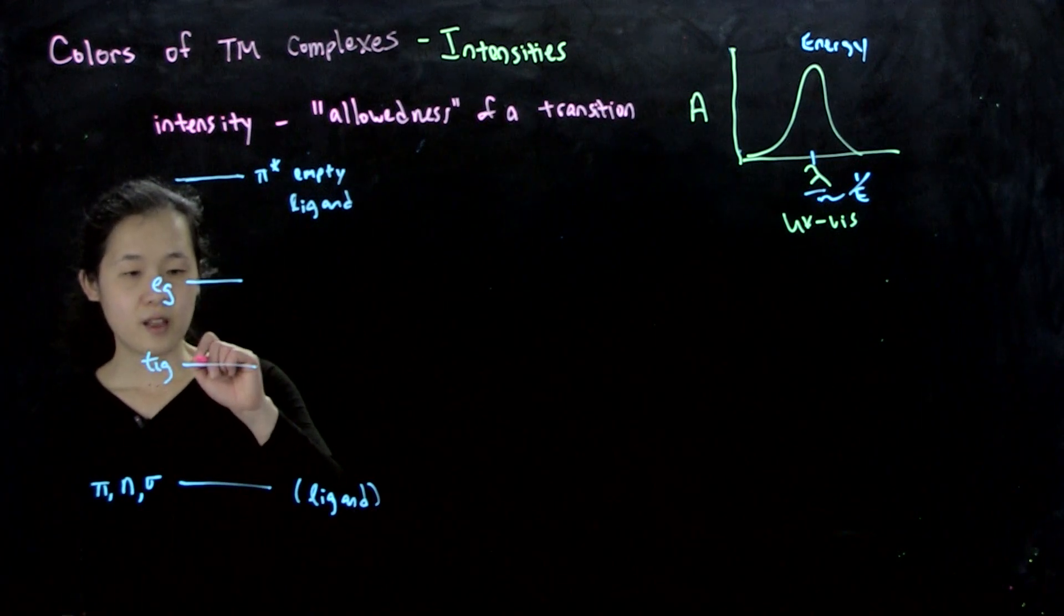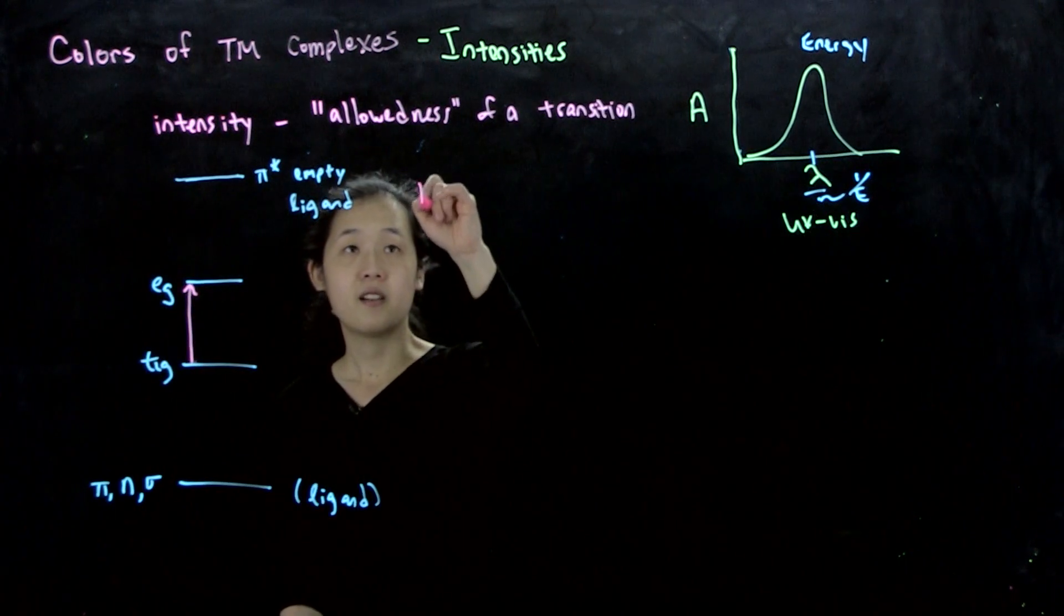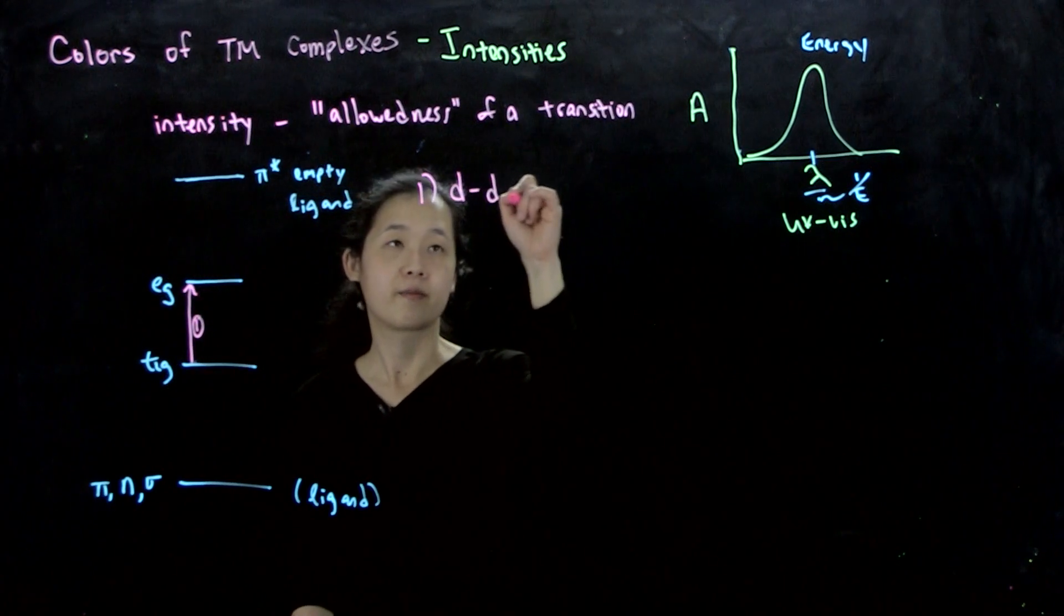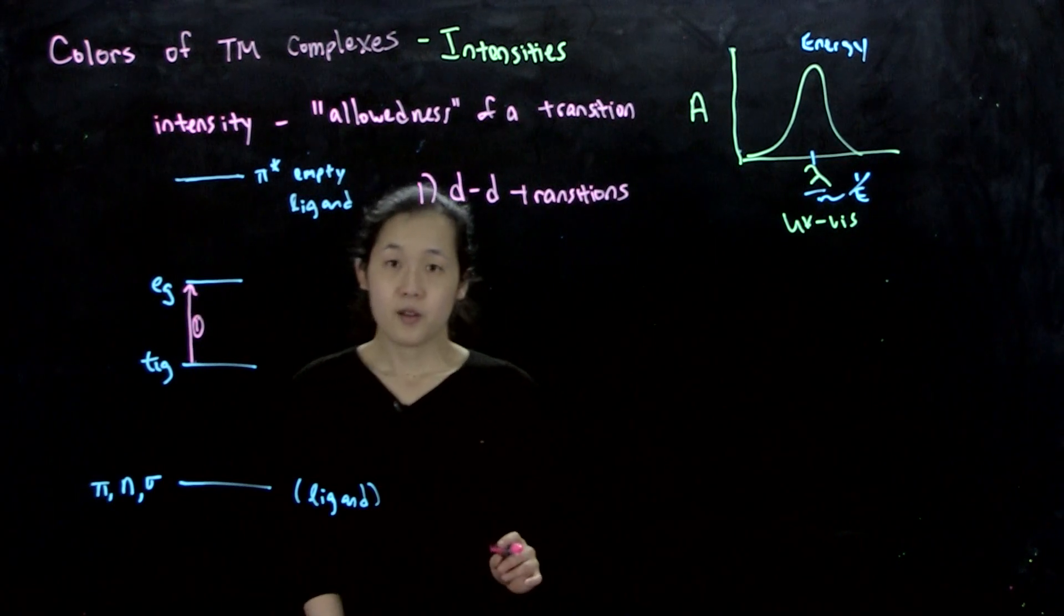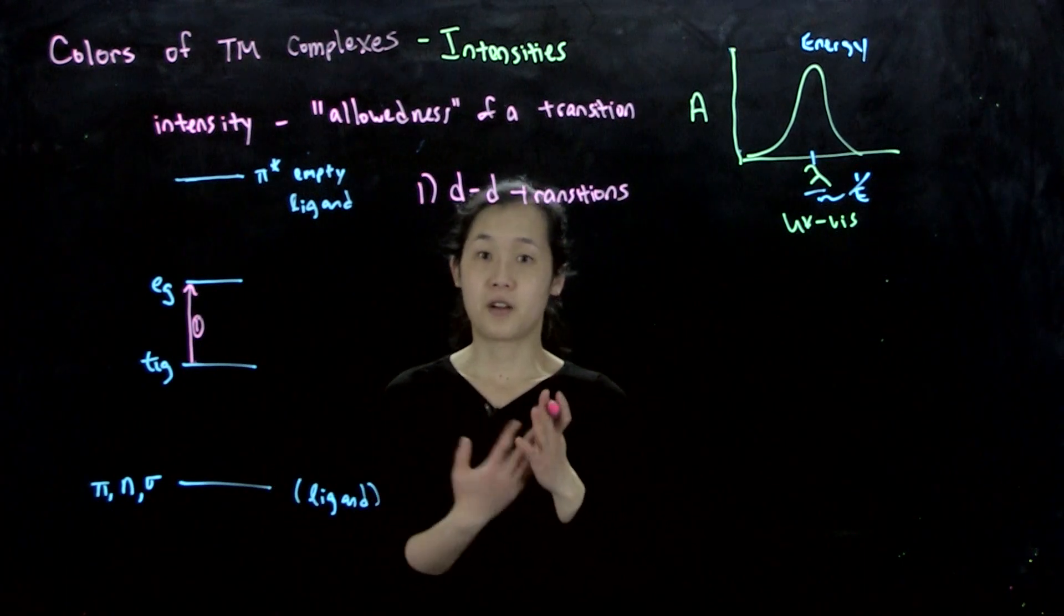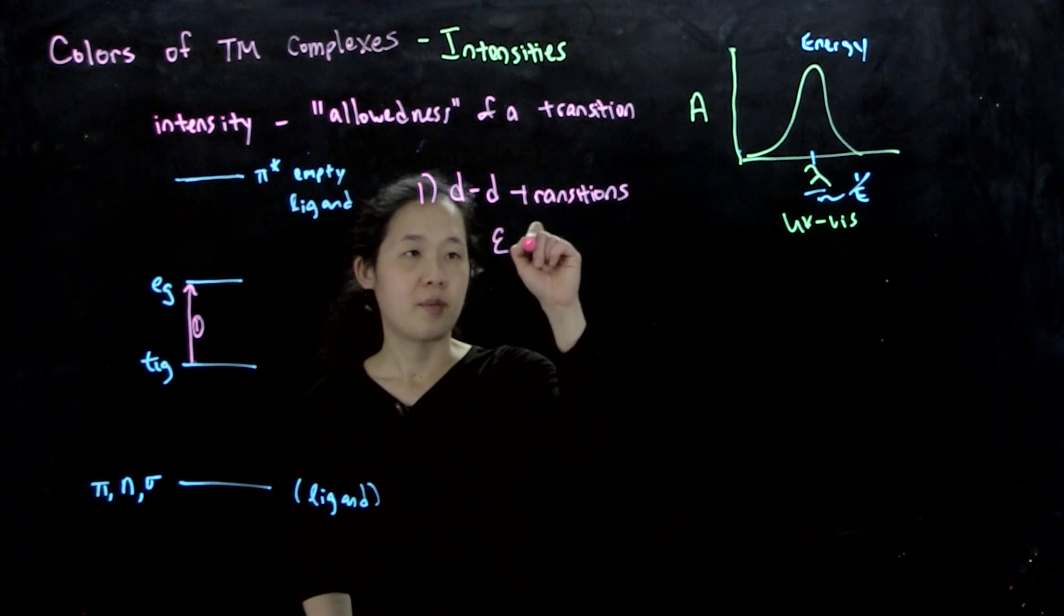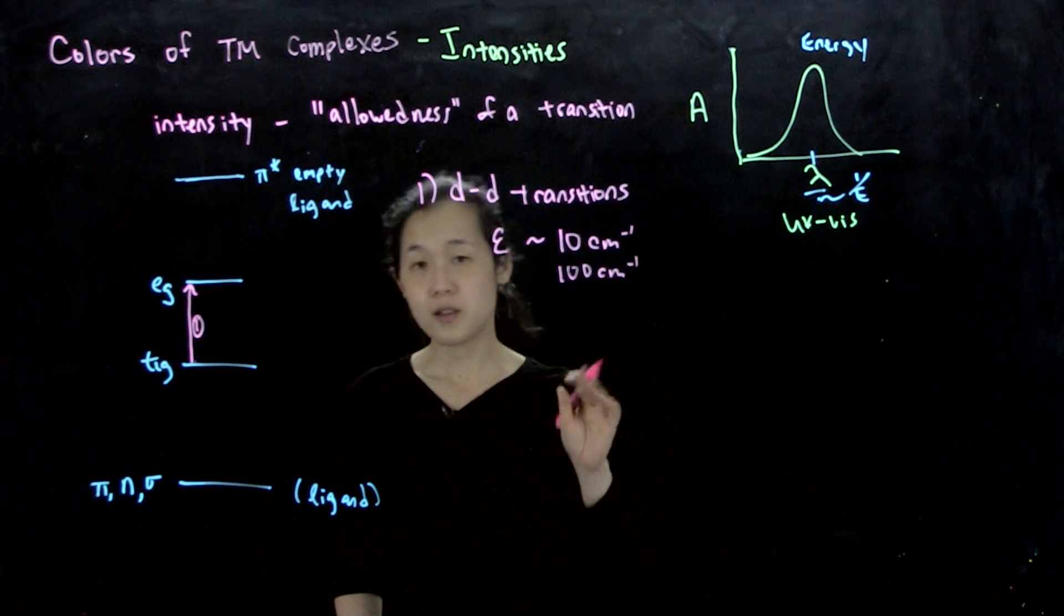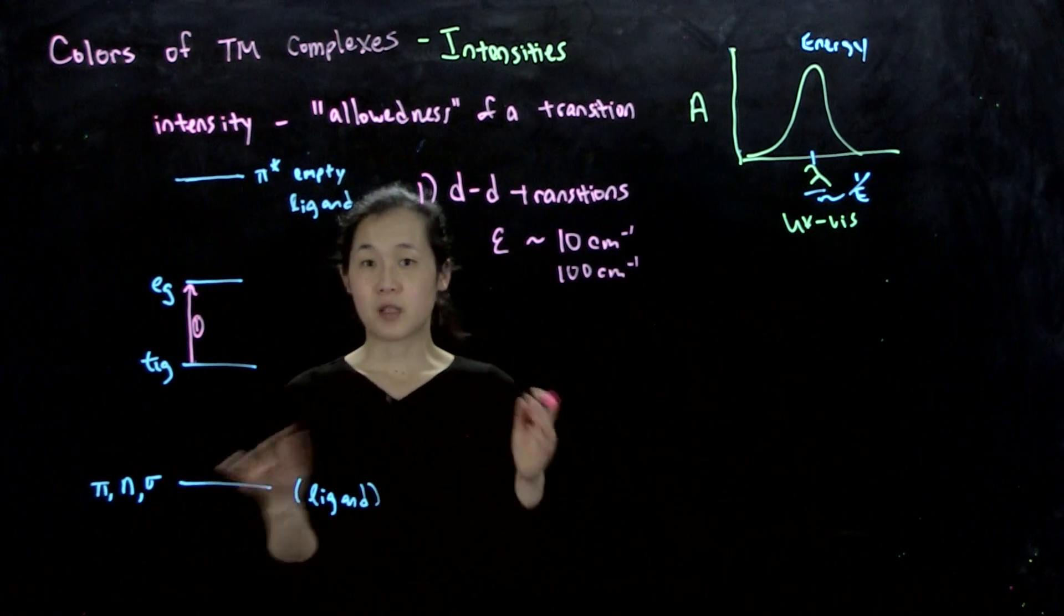So our first one, it could be exciting from, let's say, t2g to eg, which we talked about last video. So this would be type 1. So these are d-d transitions. And so if they're spin allowed, like we talked about just now, then they're more intense. If they're spin forbidden, then they're going to be not very intense. The typical intensity of these are about maybe like 10 wavenumber, maybe 100. So they're actually not that intense, but we do see them. And so that's why d-transition metal complexes are often colored.